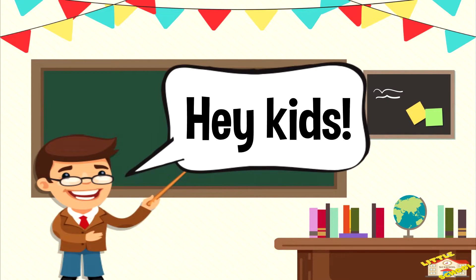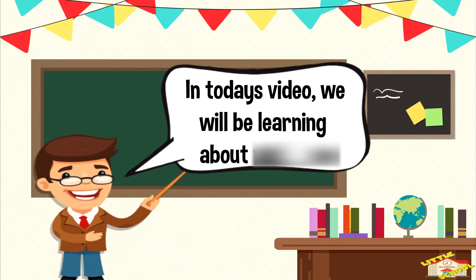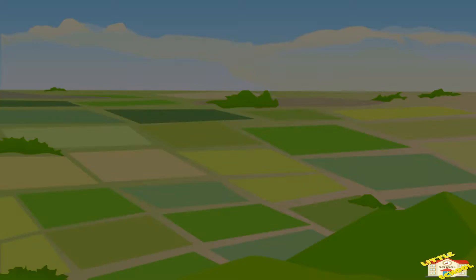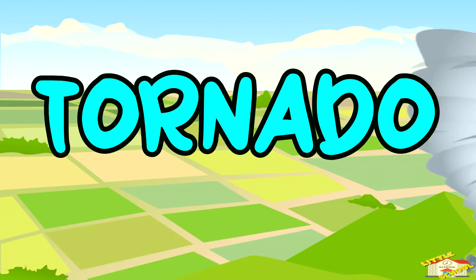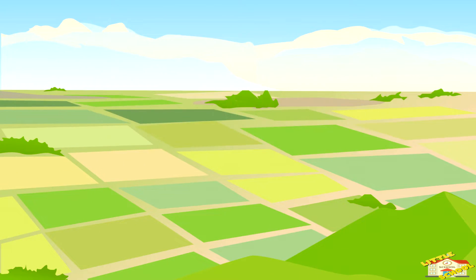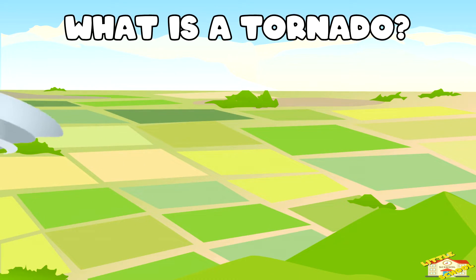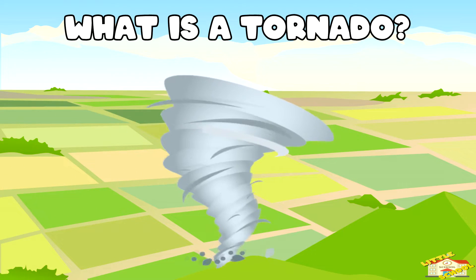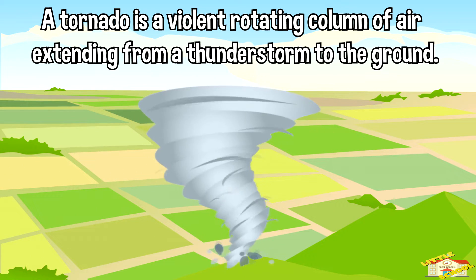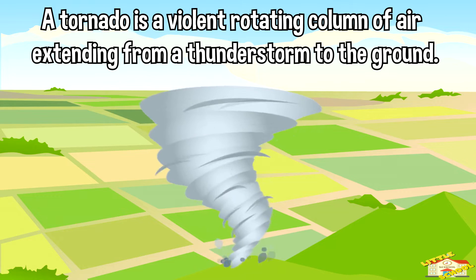Hey kids, in today's video we will be learning about tornadoes. Are you ready? Let's begin! What is a tornado? A tornado is a violent rotating column of air extending from a thunderstorm to the ground.